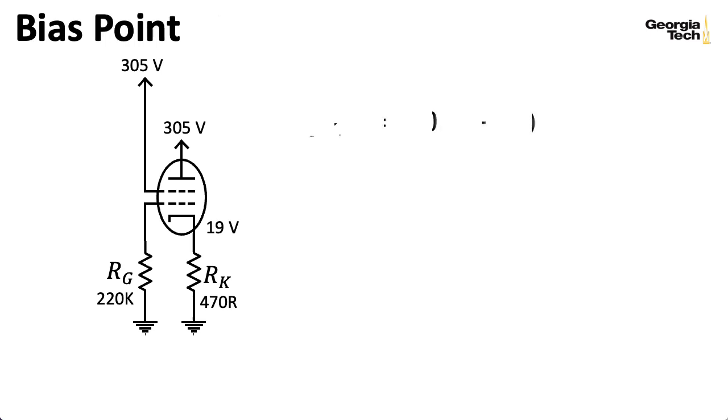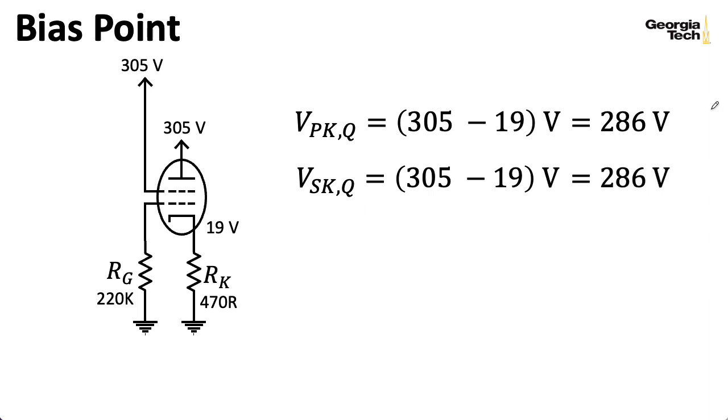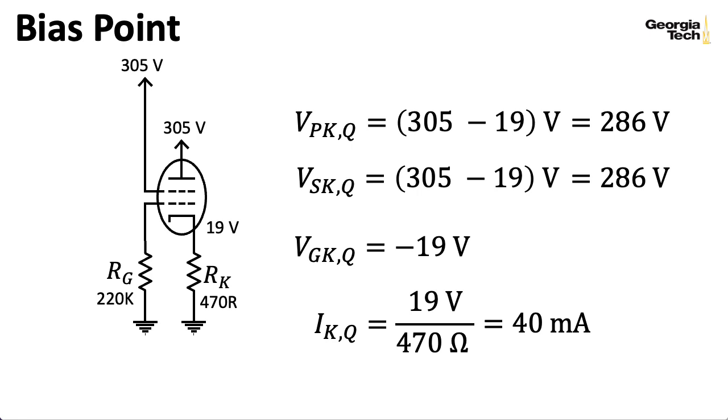So the plate to cathode voltage is just 305 volts minus 19 volts, which gives us 286 volts. Similarly, the screen to cathode voltage is 286 volts, but I want to emphasize that's only for this particular design. In some other designs, this number will be lower. So the grid to cathode voltage is going to be just minus 19 volts, and the bias current is just 19 volts divided by 470 ohms by Ohm's law, giving us 40 milliamps.